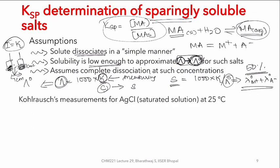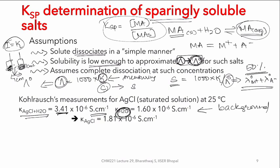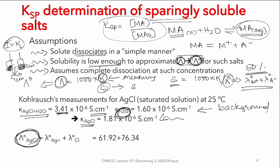One has to be careful in such measurements — the conductivity of water should also be carefully measured so that it can be subtracted. This background must be removed, and one can then get the conductivity of AgCl as the difference: 3.41 − 1.60 = 1.54 × 10⁻⁶ S/cm (approximately). Once the conductivity of AgCl is determined, the next step is to determine the equivalent conductance of AgCl at infinite dilution.